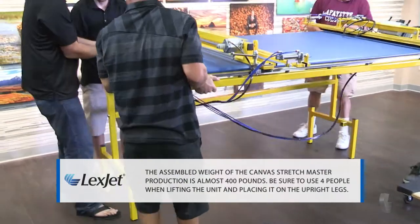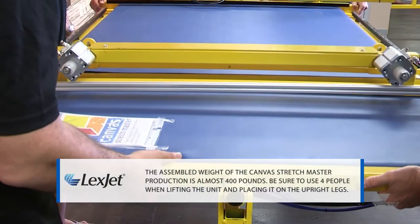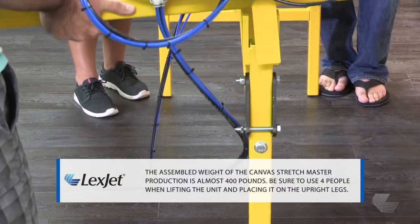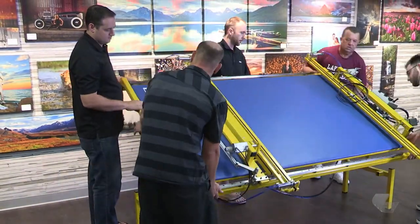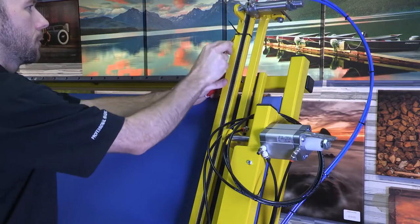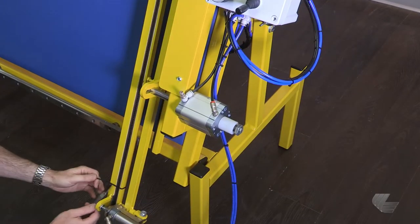With four people, lift the machine and place the mounting arms in the guide rails on the upright legs. Remember to remove the long plastic ties from the gripper arms.